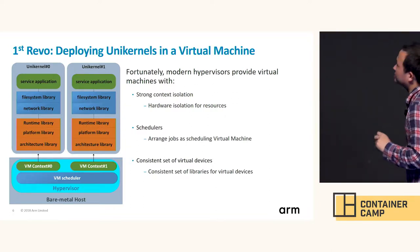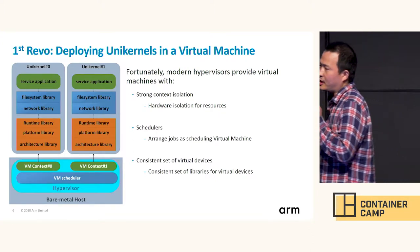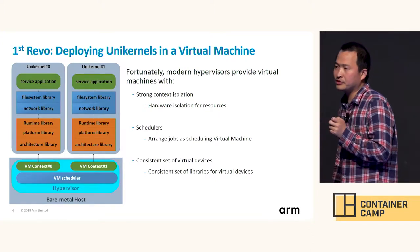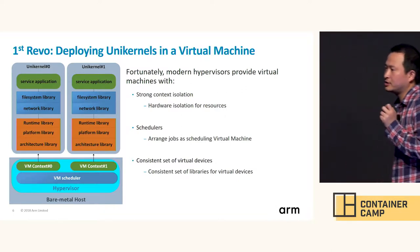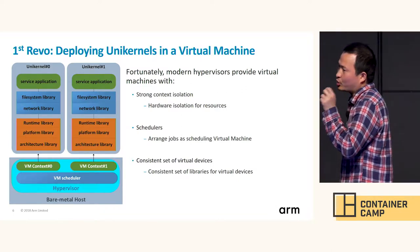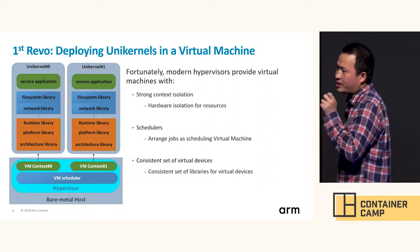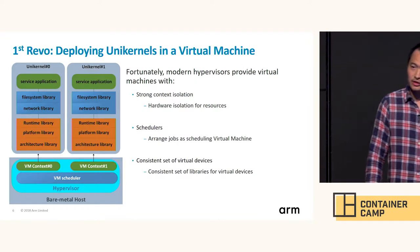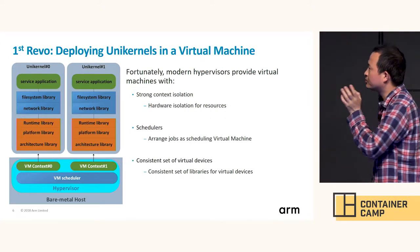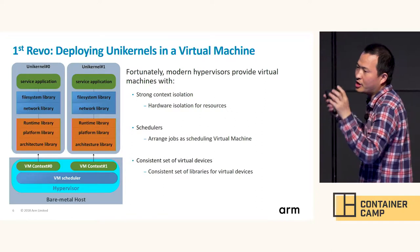The second benefit is scheduling. Hypervisors mostly have schedulers that can be used for different scenarios. Because one UniKernel occupies a dedicated virtual machine, when the hypervisor schedules the virtual machine, the UniKernel job is scheduled at the same time.